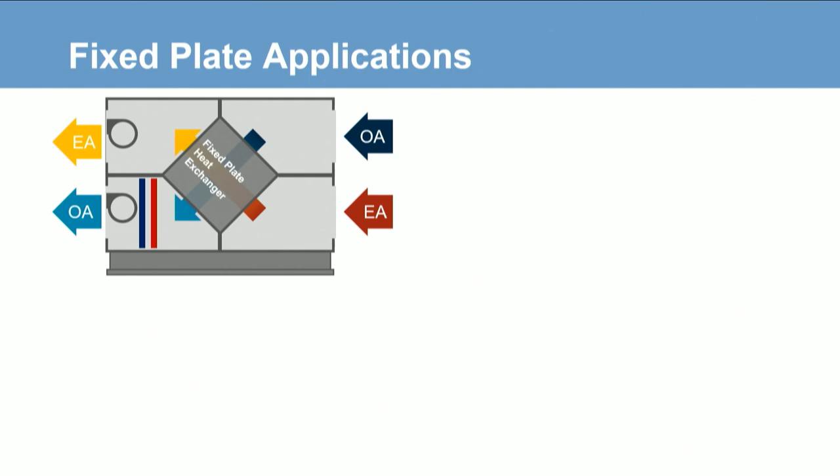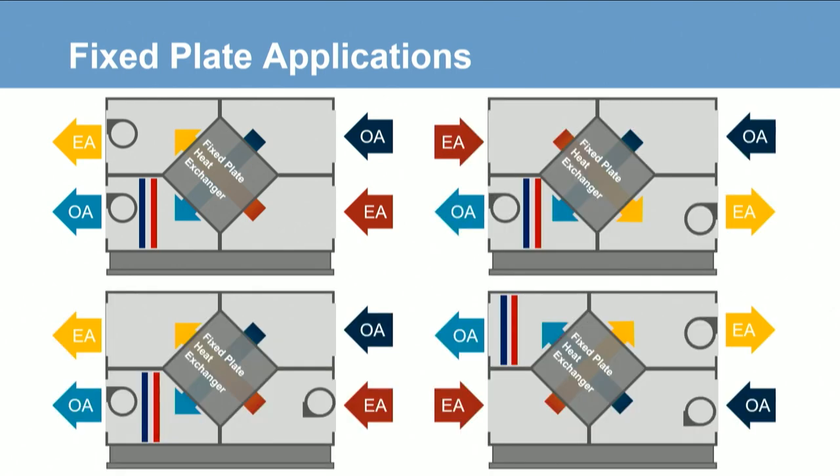Capacity control is handled with face and bypass dampers. Fixed plate heat exchangers can be applied in a variety of ways, though each configuration must be cross flow, allowing some flexibility in fan placement and inlet and outlet locations. In the heating season configuration, outdoor air enters the air handler, absorbs heat as it passes through the heat exchanger and heating coil, and exits. Meanwhile, exhaust air from the building passes through the heat exchanger, releasing heat, and exits the building. There are other ways to lay out components and accomplish the same task.